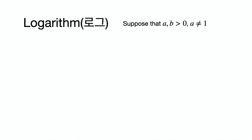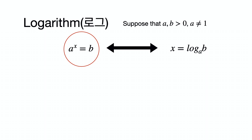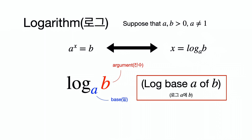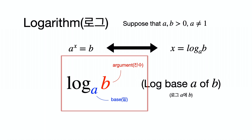The next chapter is logarithm. Suppose that a is positive and not equal to 1. When a to the x power equals b, x can be defined in the logarithmic form shown on the right side. This is usually read as 'log base a of b,' where a is called the base and b is called the argument.